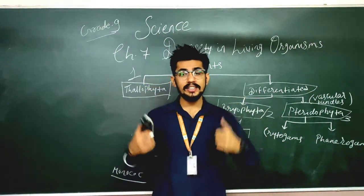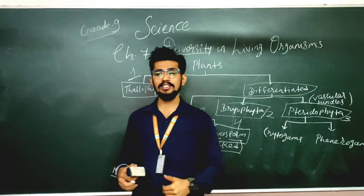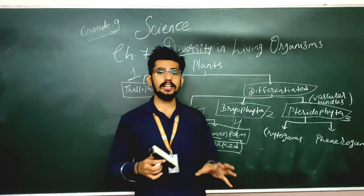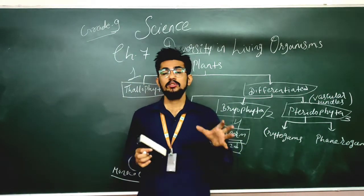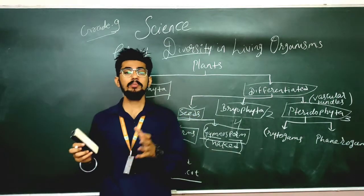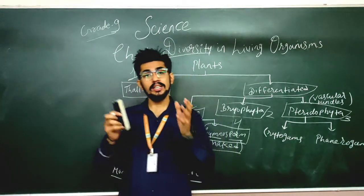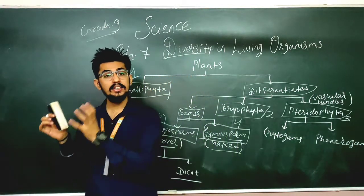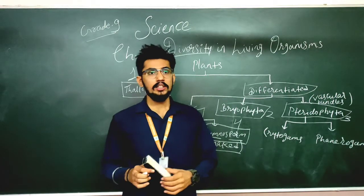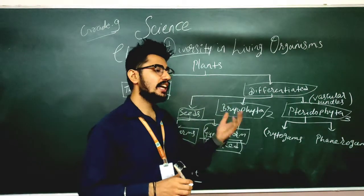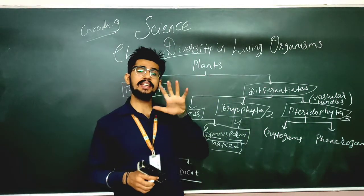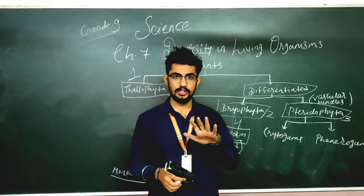To understand the diversity in every organism, we have divided them into particular groups and particular classifications. With the help of scientists, we have a system called the five kingdom classification, which is one of the most important classifications in human history.